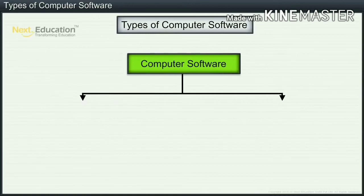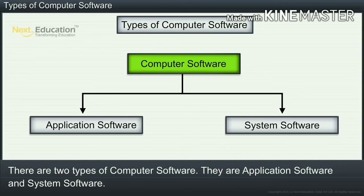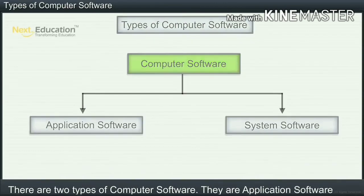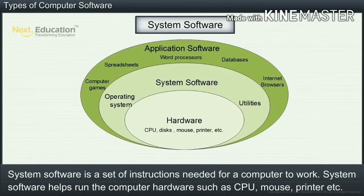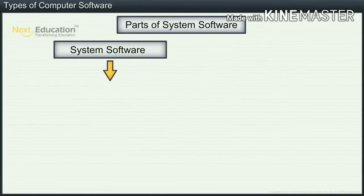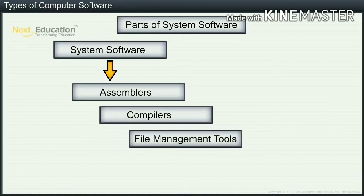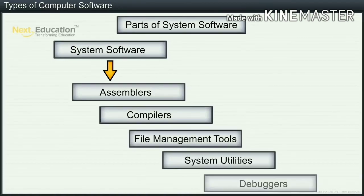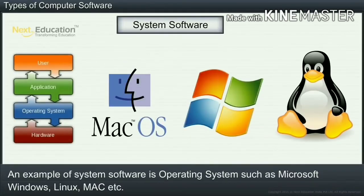Computer software can be classified into two types: Application Software and System Software. System software is a set of instructions needed for a computer to work. System software helps run the computer hardware such as CPU, mouse, printer, etc. The programs that are part of system software include assemblers, compilers, file management tools, system utilities, and debuggers. An example of system software is an operating system such as Microsoft Windows, Linux, Mac, etc.